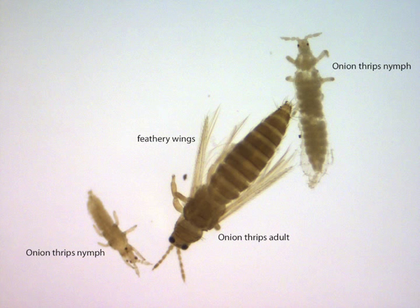Adults and nymphs use their single sword-like mandible to rupture plant cells on the outer surface of leaves and other plant parts. They then suck out the contents of the cells by pressing their mouth parts onto the damaged surface.